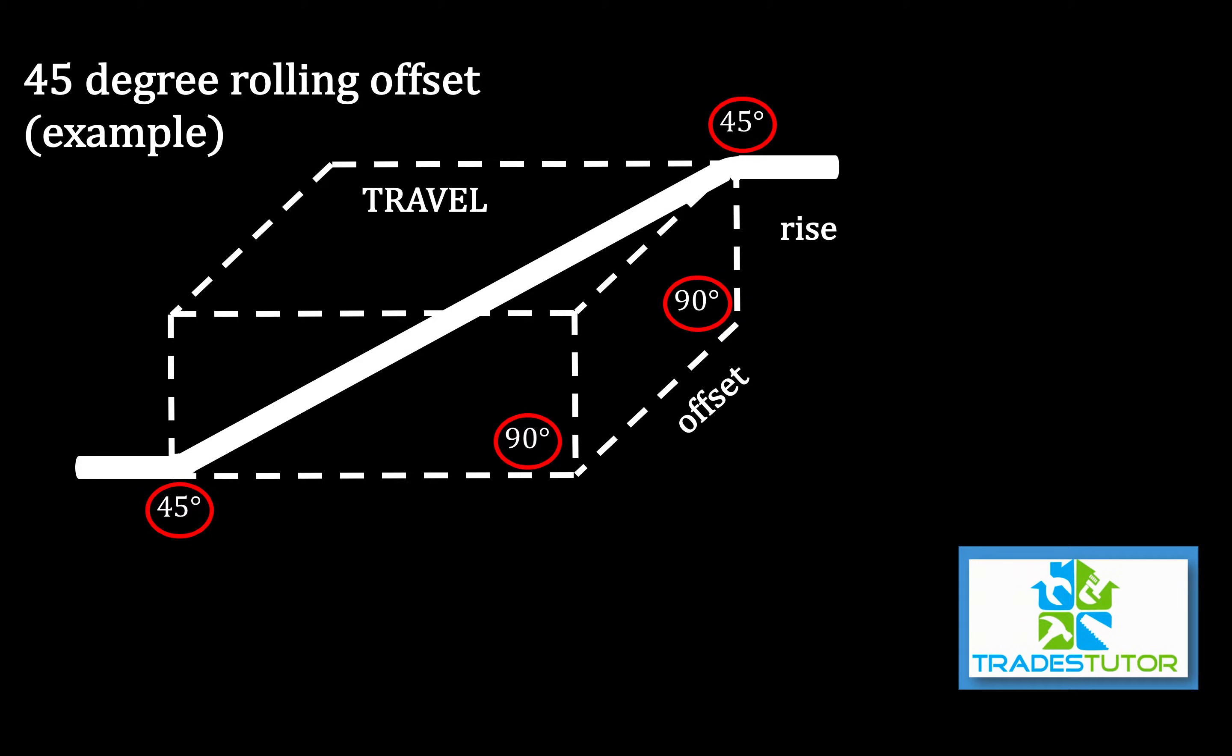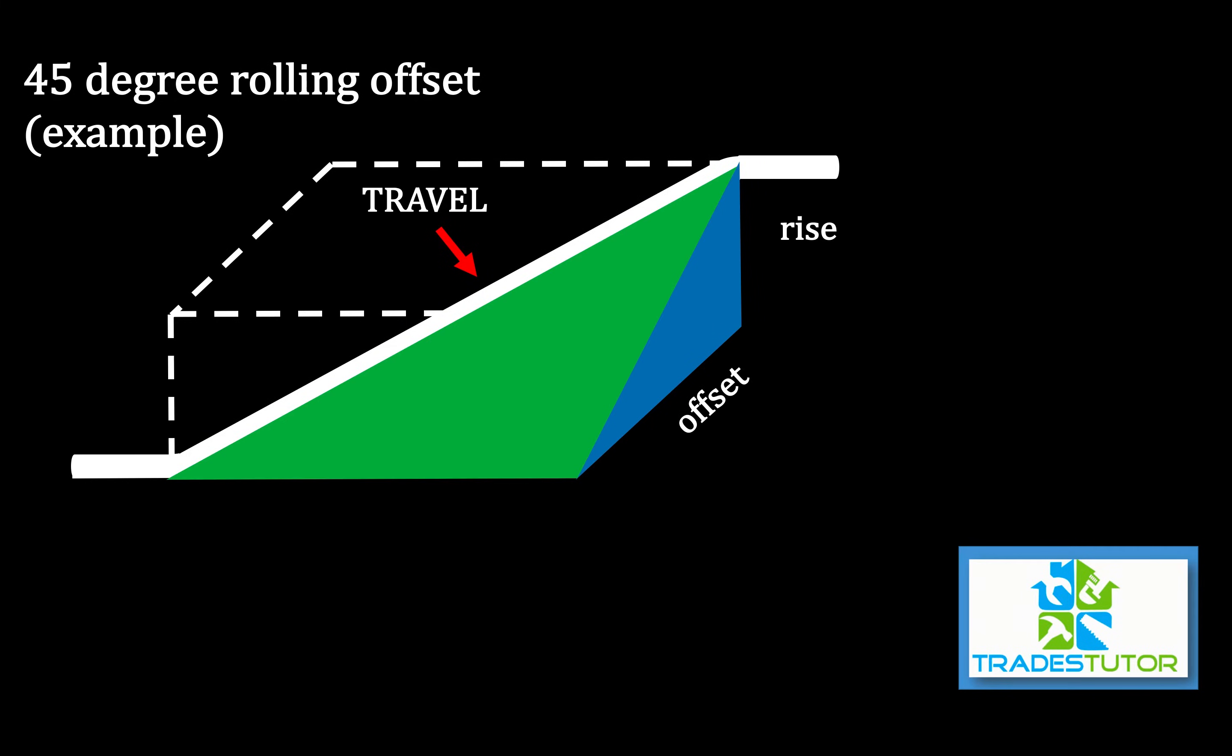So the third part is what we're actually going to try to find out, and that's that travel. That's this piece of pipe here. So this is two triangles. There's triangle number one, the blue one, and there's triangle number two, the green one. So this is two calculations and working with those two triangles to get us to the travel.